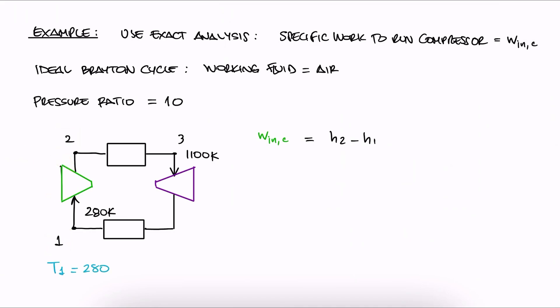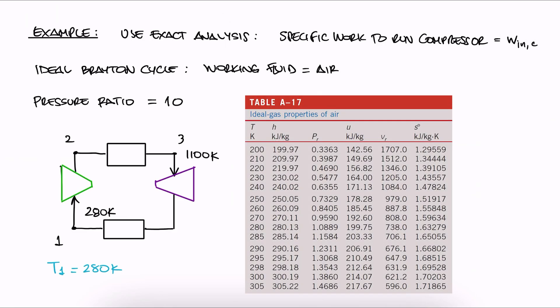Since we were given T1, we can go to the ideal gas property tables for air and look up T1 to find the specific enthalpy there, h1.